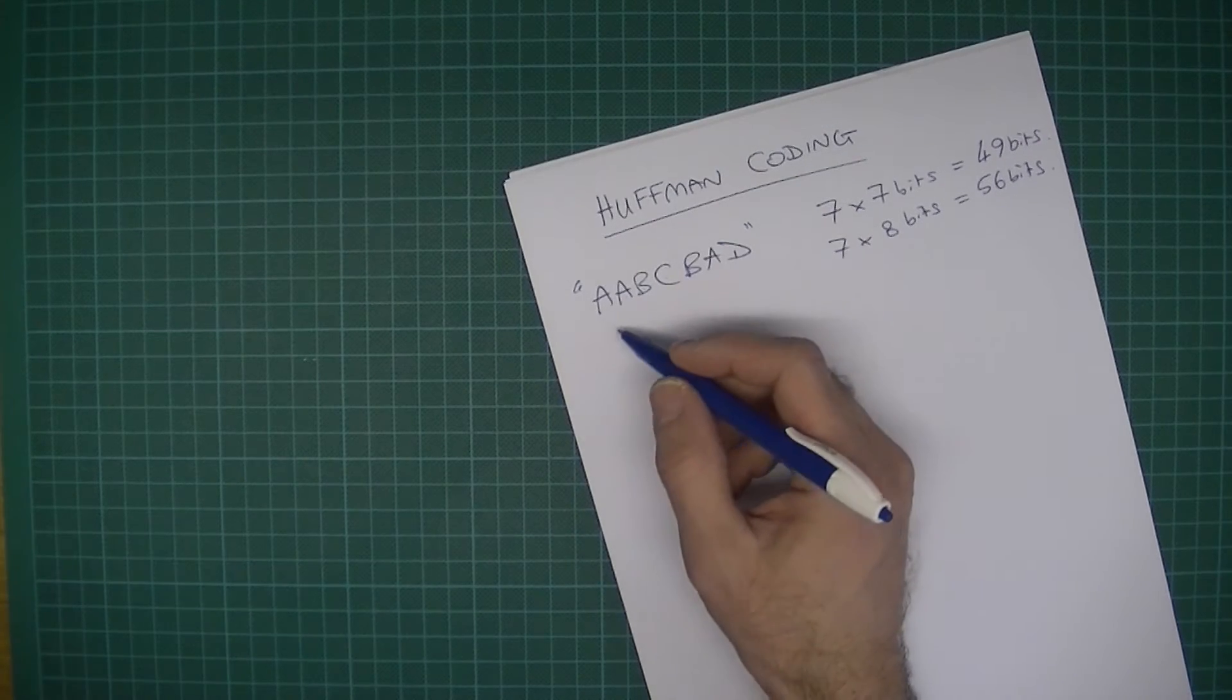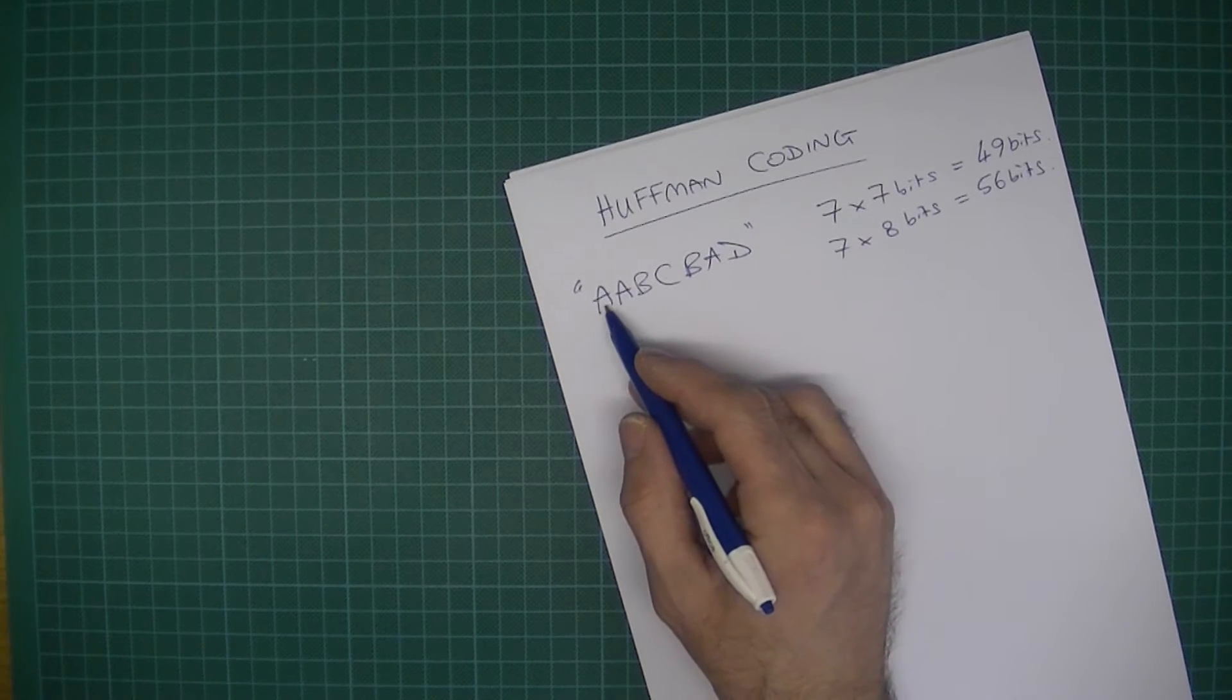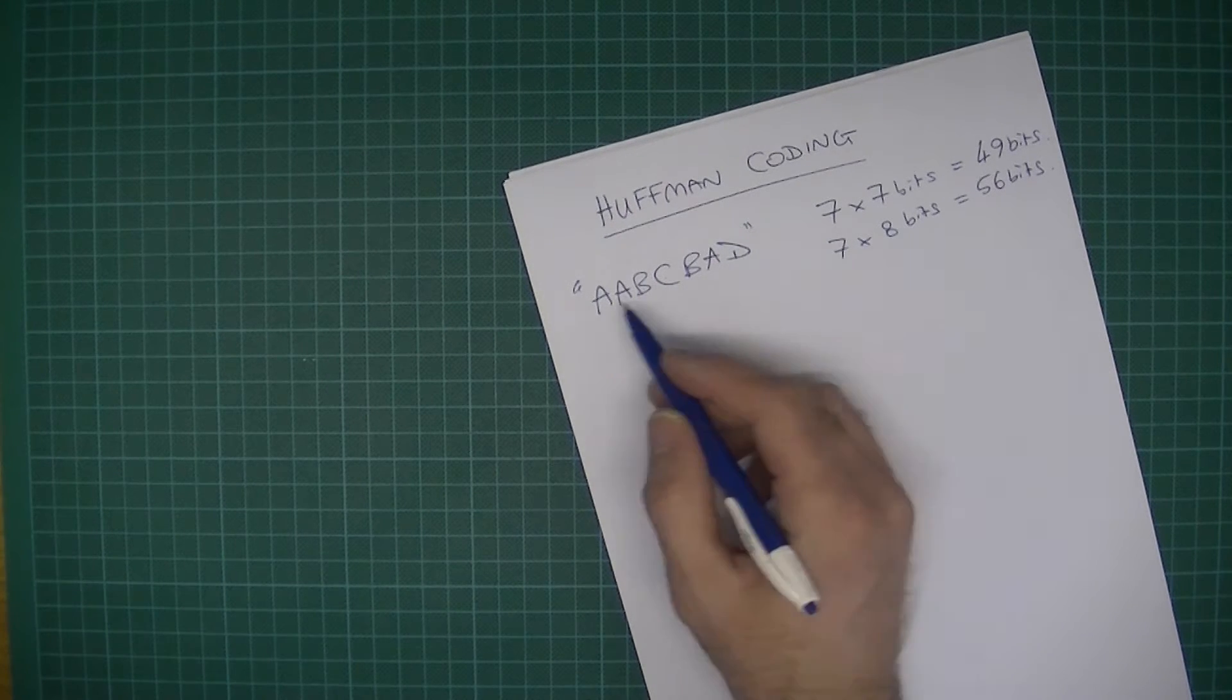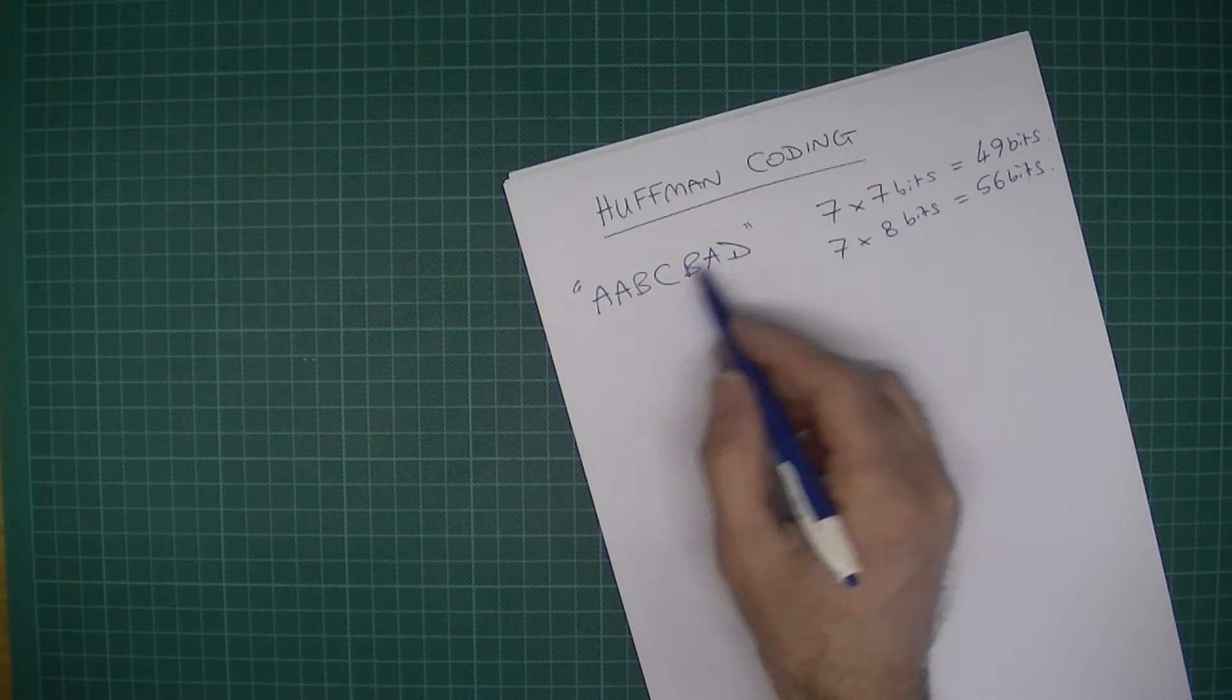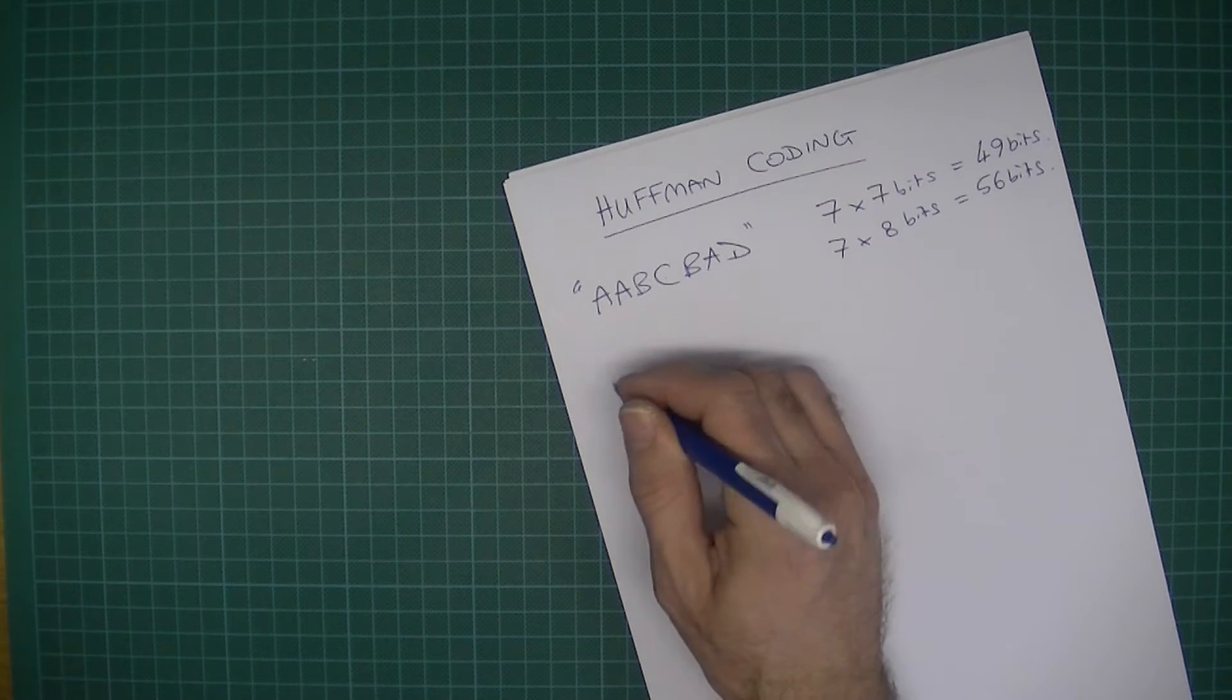So let's try this. The first thing we need to do is to make a frequency table, so I need to count the frequency or the number of each letter. There's one, two, three letter A, etc.